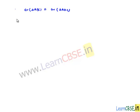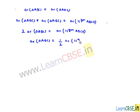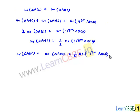Substituting into equation 1: area of triangle ABC plus area of triangle ABC equals area of parallelogram ABCD. So 2 times area of triangle ABC equals area of parallelogram ABCD, which gives us area of triangle ABC equals half times area of parallelogram ABCD. Let this be our first equation.